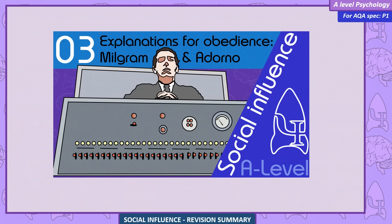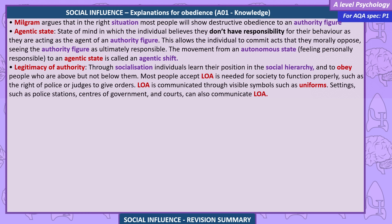Explanations for obedience — Milgram and Adorno. Milgram argues that in the right situation, most people will show destructive obedience to an authority figure. Agentic state: a state of mind in which the individual believes they have no responsibility for their behaviour as they are acting as the agent of an authority figure. This allows the individual to commit acts they morally oppose, seeing the authority figure as ultimately responsible. The movement from an autonomous state to an agentic state is called an agentic shift. Legitimacy of authority: through socialisation, individuals learn their position in the social hierarchy and to obey those above them. Most people accept that legitimacy of authority is needed for society to function properly — such as the right of police or judges to give orders. Legitimacy is communicated through visible symbols such as uniforms, and through settings such as police stations, centres of government, and courts.